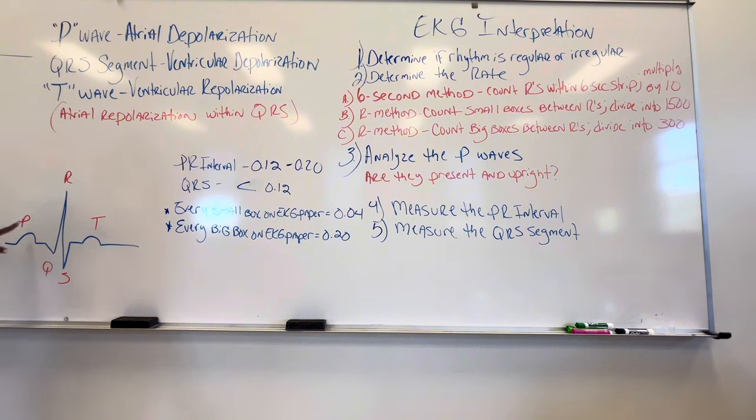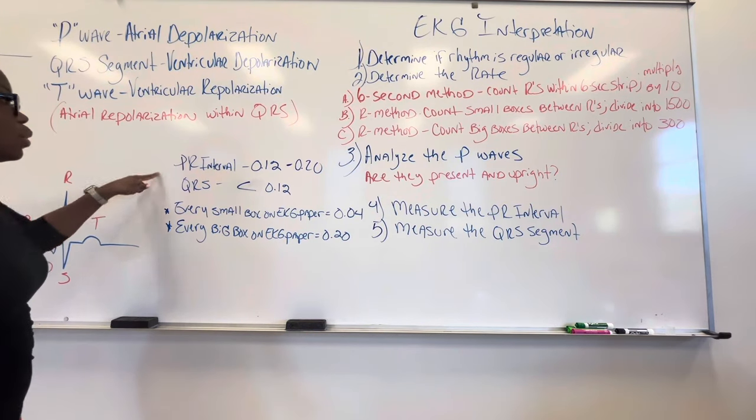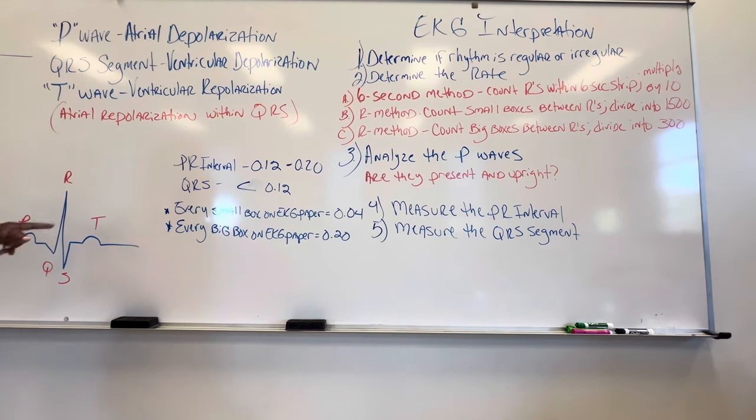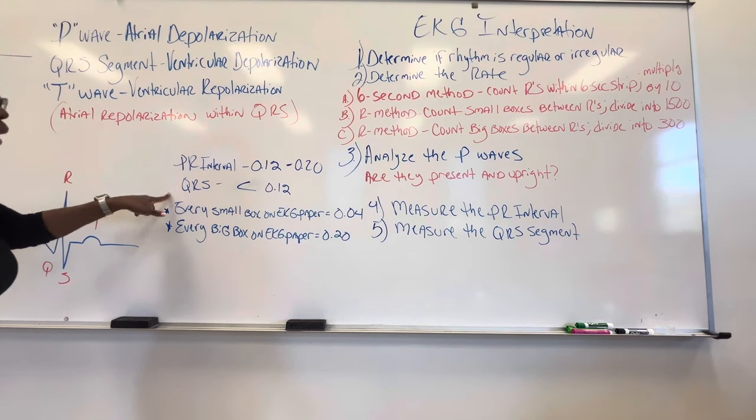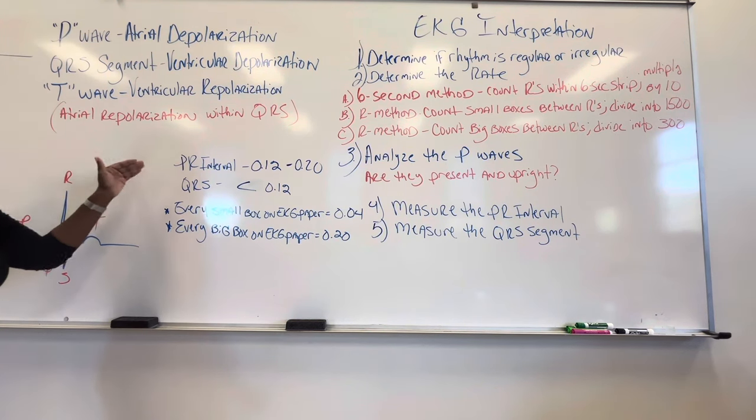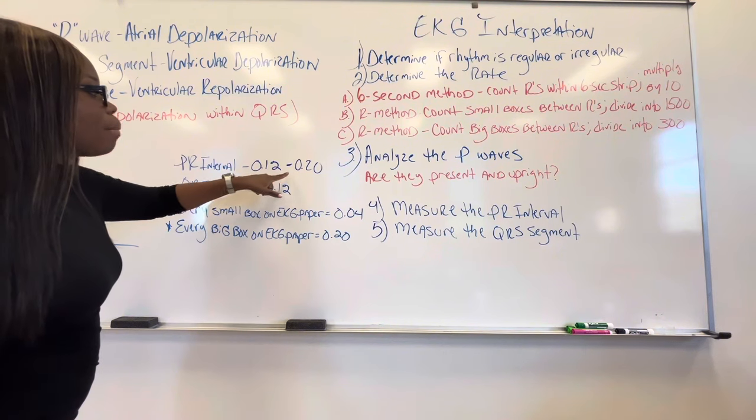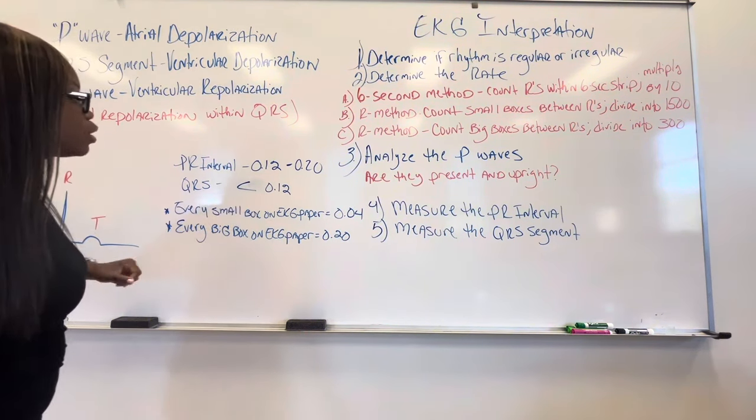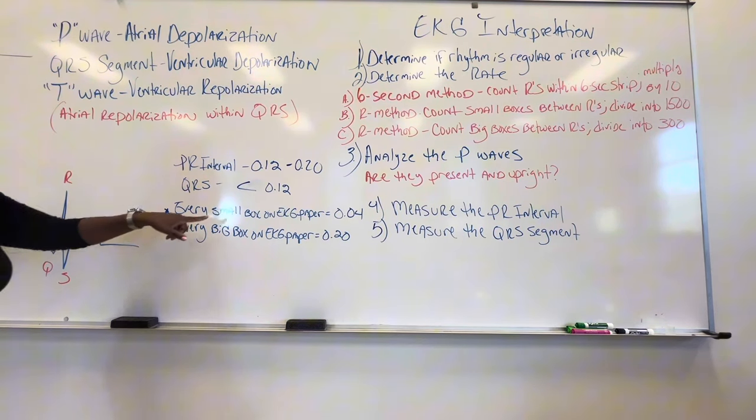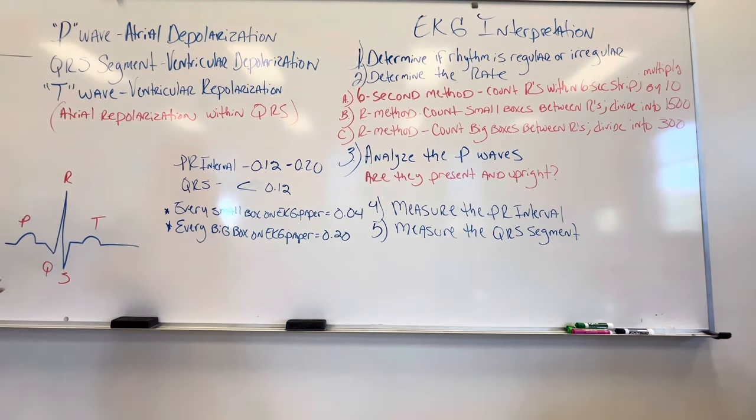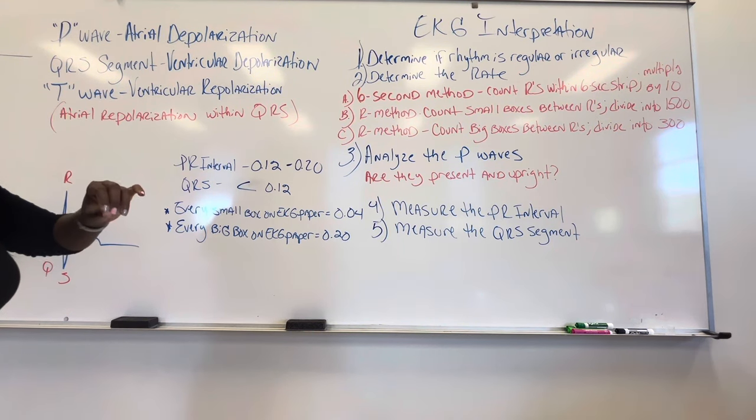So again, P wave is atria, that's when the atria is contracting. Then we got the QRS is when the ventricles are contracting, followed by the T wave. Now I want you guys to add this to your notes because when we go to interpret the EKG, we're going to come back to this. Make a note that the PR interval should be between 0.12 and 0.20. The QRS should be less than 0.12. And also make a note that every small box on the EKG paper is 0.04. The big boxes is 0.20. So these are going to be some foundational things for when it comes to interpreting the EKG.